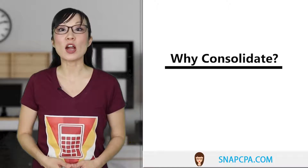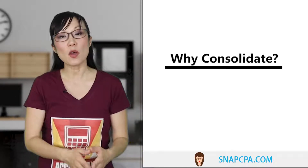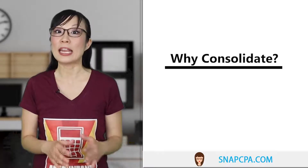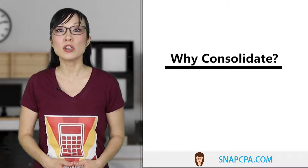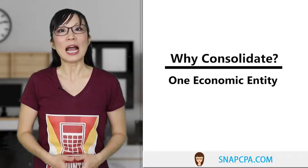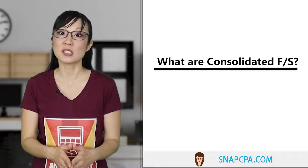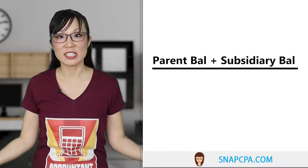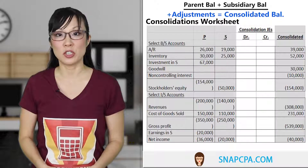Why do we consolidate? The parent and sub are separate companies with their own separate financial statements. During the year, parent maintains only its financial records and sub maintains its separate financial records. Only when parent has to present its financial statements — usually at the end of the quarter and year end — do we create consolidated financial statements. These include numbers for the parent and all the entities it controls as one economic entity. In its simplest form, it just means adding up the parent's numbers and the subsidiary's numbers together — for example, cash on the consolidated balance sheet will be the total of the parent's cash and the subsidiary's cash.